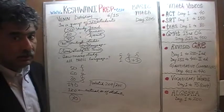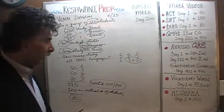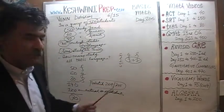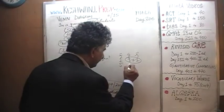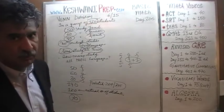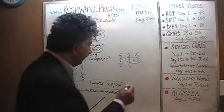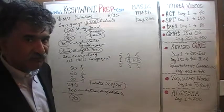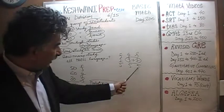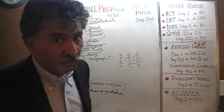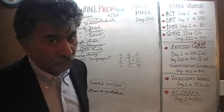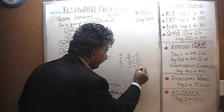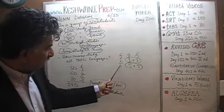If we only had one person studying three languages, we would have a discrepancy of two. If we had five people studying all three languages, those five people would be counted once as people who study French, again as people who study German, and again for the third time as people who study Spanish. Five people would be counted as 15 people, giving a discrepancy of ten.